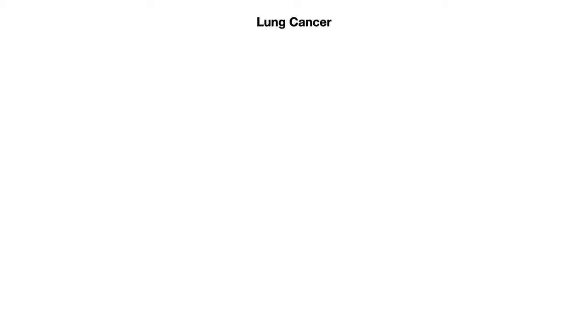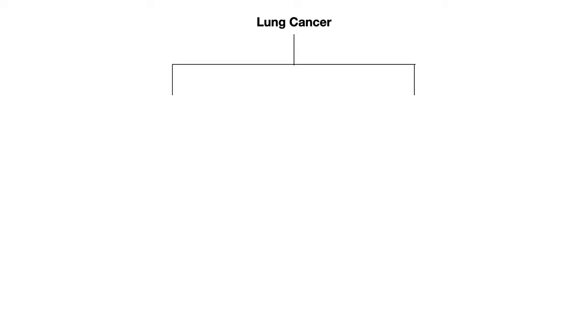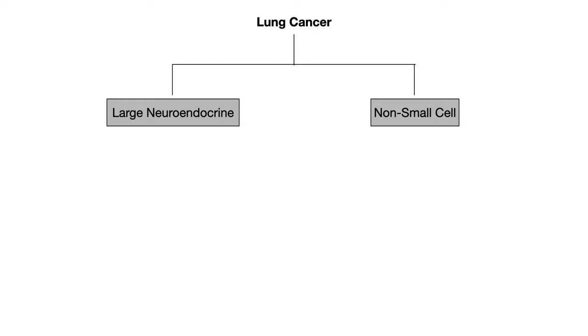When it comes to lung cancer, you don't really need to conceptualize this and break it down into different categories. But the way I think you should think of lung cancers is two big categories — the same categories the World Health Organization uses. On the left, we'll talk about large neuroendocrine lung cancers. And on the right, we'll talk about non-small cell lung cancers.